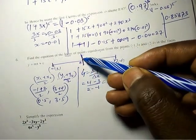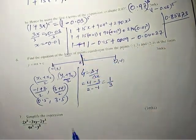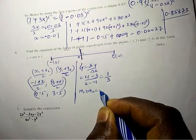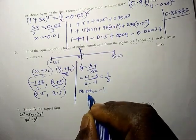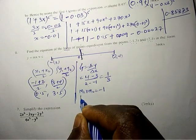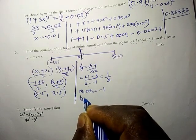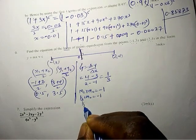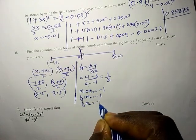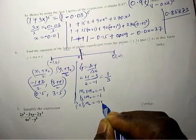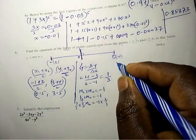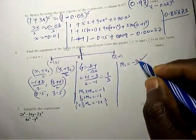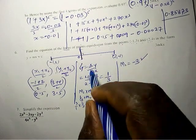This line is perpendicular to the locus line. Perpendicular lines satisfy m1 times m2 equals negative 1. So 1 over 3 times m2 equals negative 1. Multiplying both sides by 3, m2 equals negative 3. So the gradient of the perpendicular bisector is negative 3.